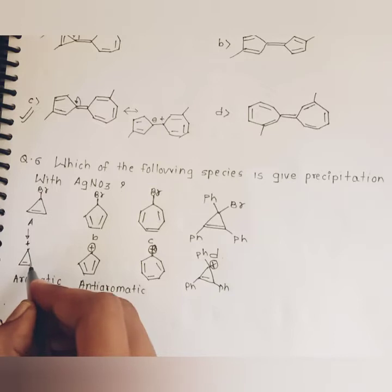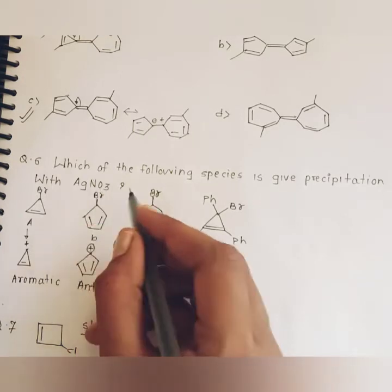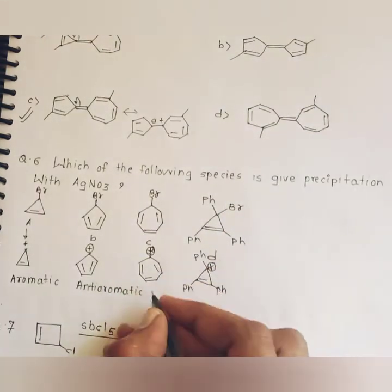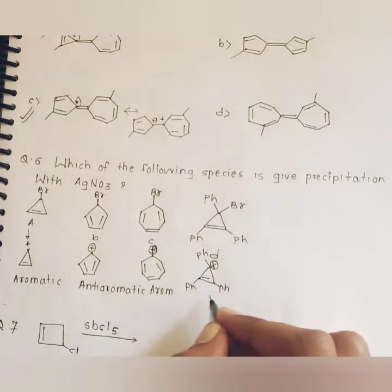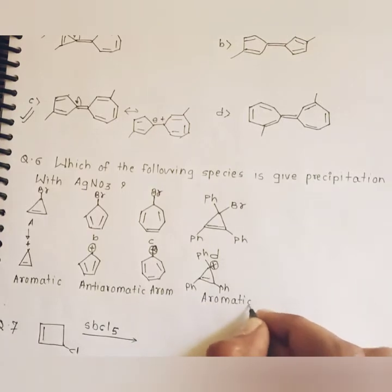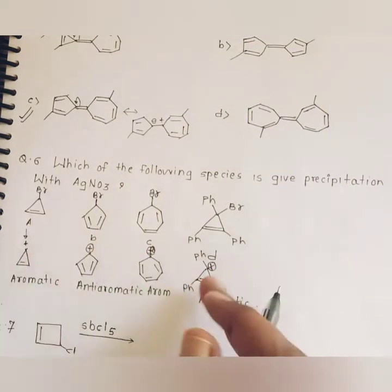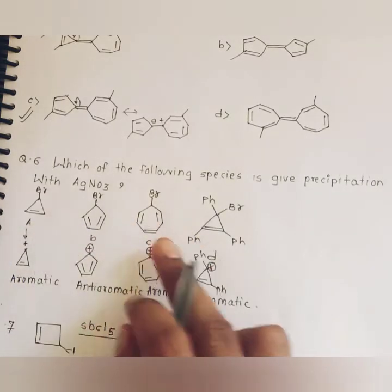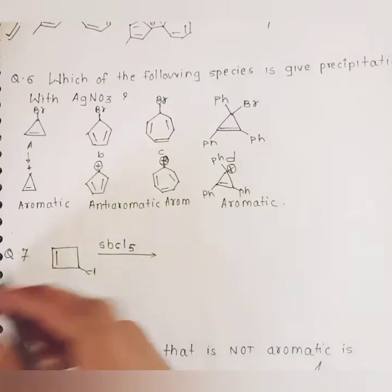Question six: which of the following species gives precipitation with AgNO3? In case of A, precipitation with AgNO3 results in the formation of an aromatic compound. In case of C, it also results in the formation of an aromatic compound. In case of D, it again results in the formation of an aromatic compound. Therefore, among A, B, C, and D — A, C, and D give precipitation with AgNO3.